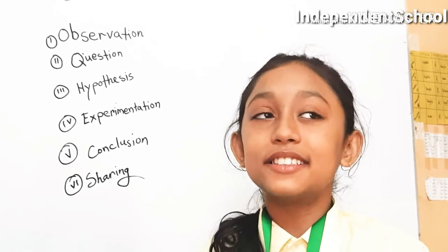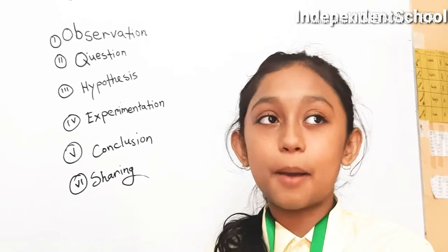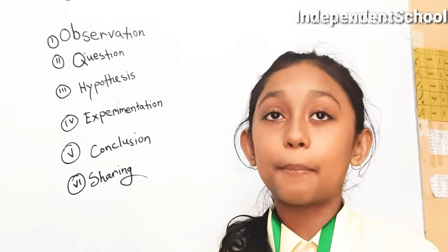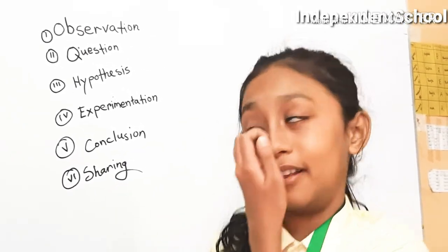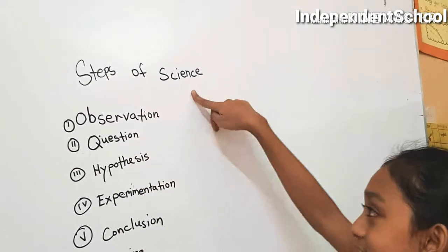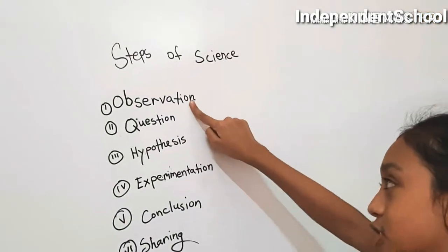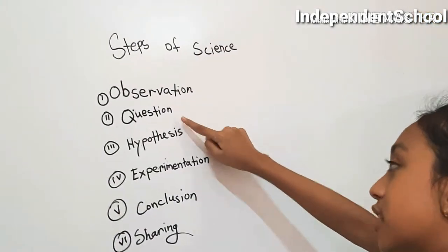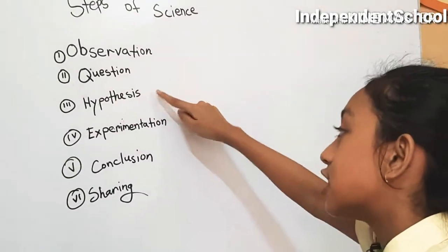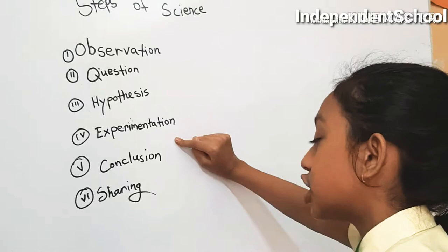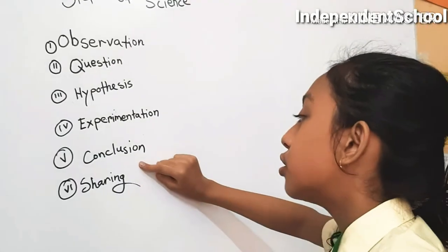Science is the knowledge or study about natural world. Steps of science: observation, question, hypothesis, experimentation, conclusion and sharing.